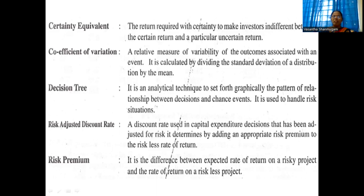The decision tree is one of the important methods. It is useful for identifying the chances of an event — that is the risk as well as the return associated with each chance of event. They predict different chances, explained in the form of a decision tree. It is used to handle risk situations. Next is the risk adjusted discount rate — a discount rate used in capital expenditure decisions that has been adjusted for risk.